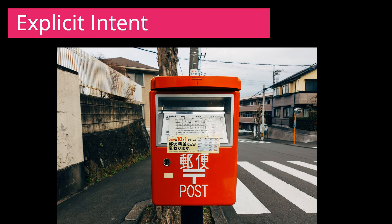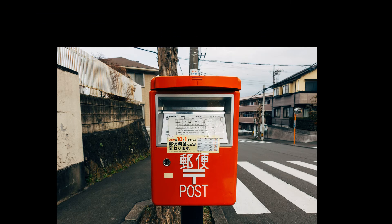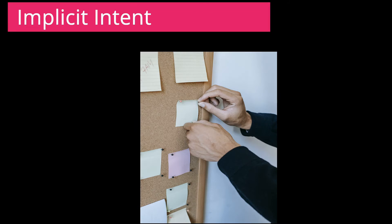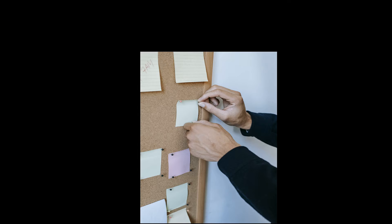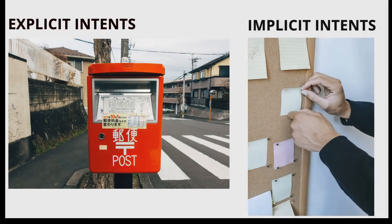Explicit intents can be compared to the postal system where post mail is specific to a receiver address, whereas an implicit intent can be compared to a job notice board where any person could see the notice board and take up a job.